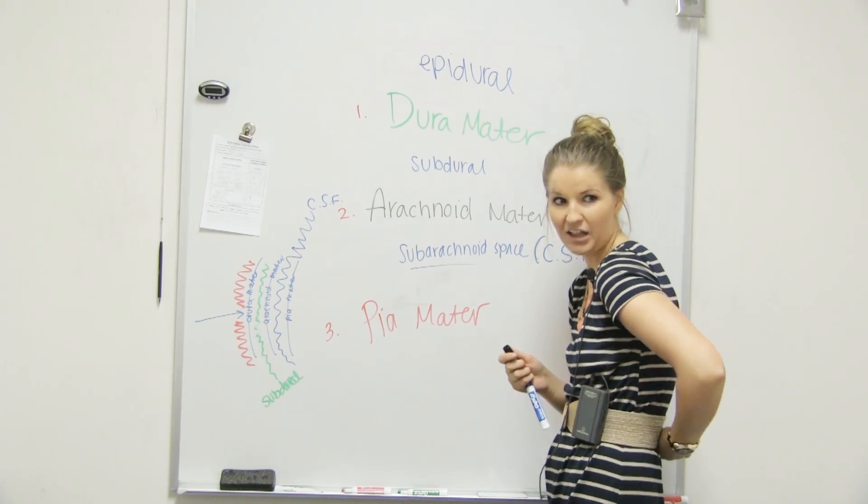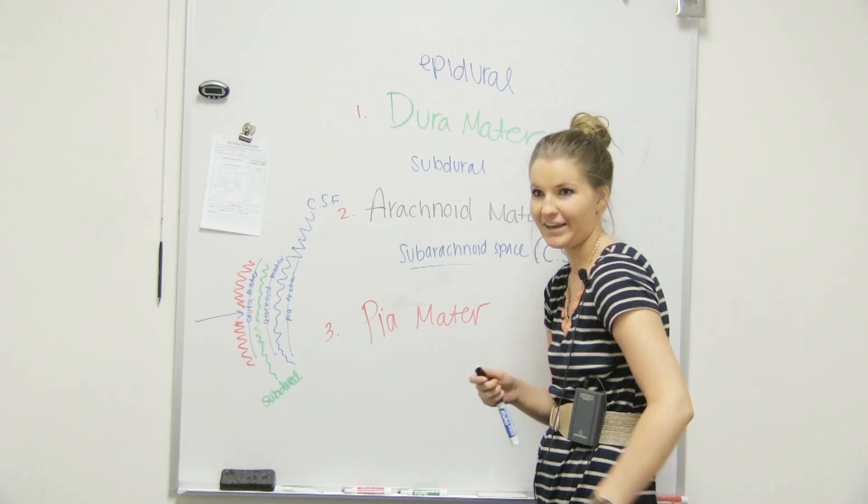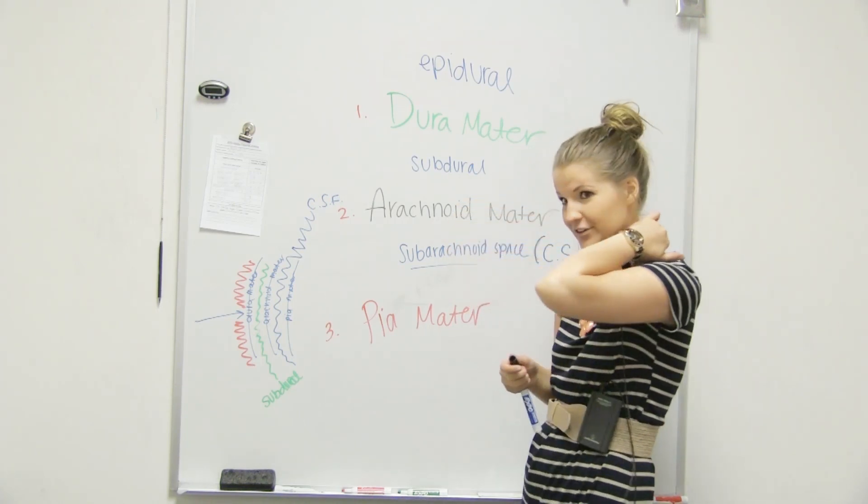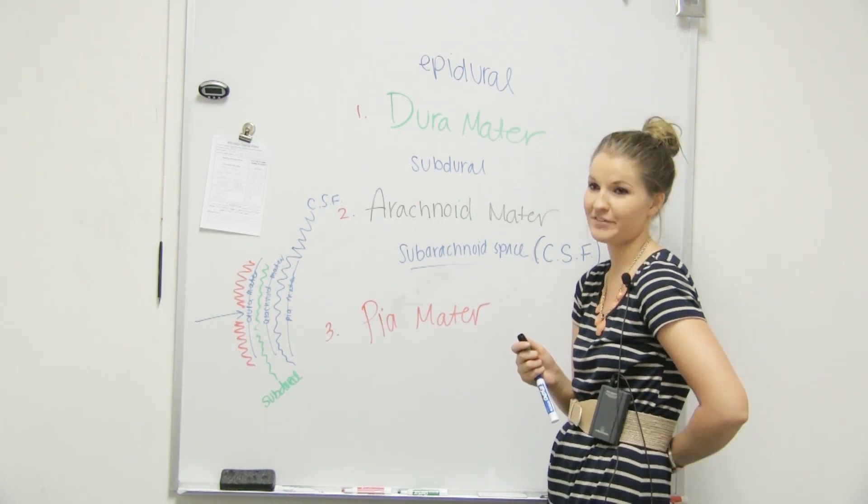Which makes sense because L is going to be lumbar, so it's our lower. When we think of getting an epidural shot, we're not like, cool, let's go right here by your cervical. We don't want that. It's going to be the vertebrae or the lumbar vertebrae.